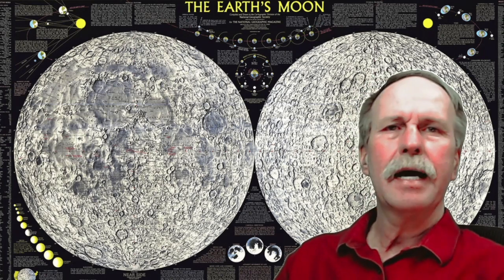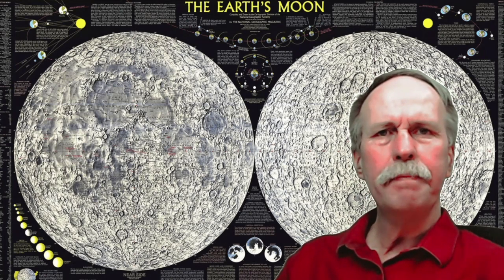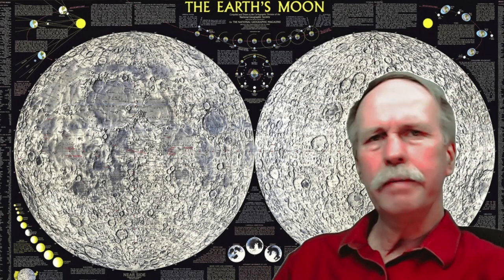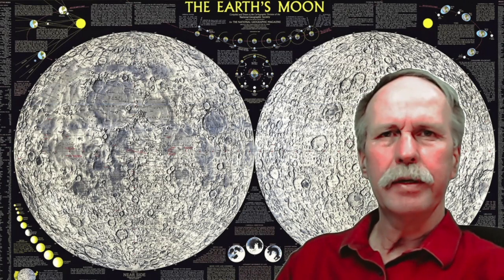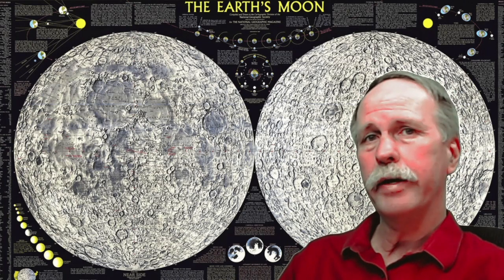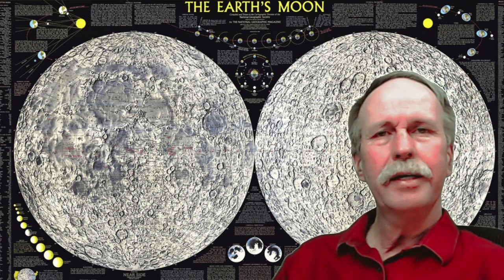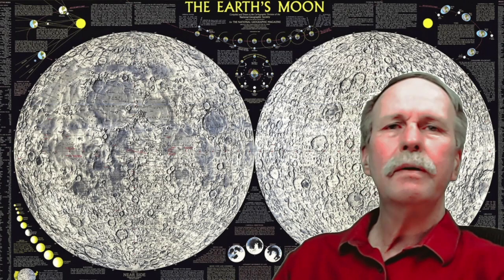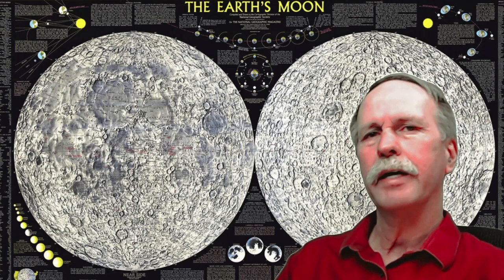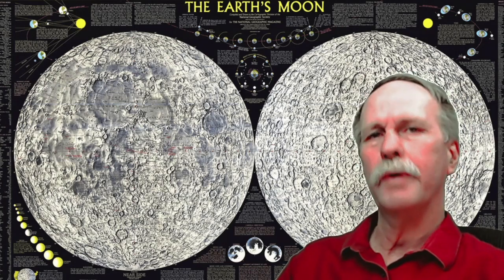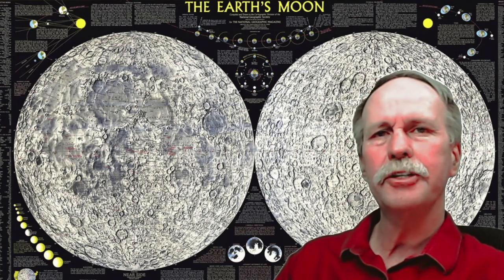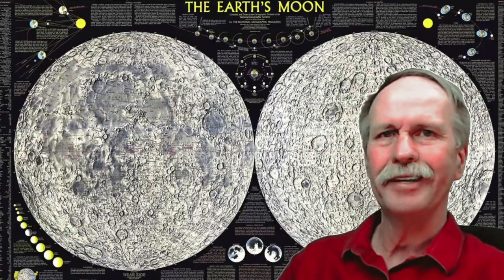Another thing people are asking me is, 'Bob, why is it that you have an image of the moon in the background of a video on Coriolis?' Well, it's because Apollo 11 gives us the answer when it comes to east and west Coriolis. So let's cue up the music and get going.